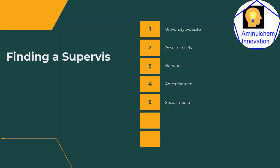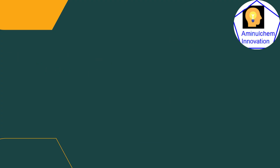How to find a supervisor? Finding a supervisor is challenging. However, if you follow certain strategies, you can easily find a supervisor to apply for admission and scholarship. Some strategies are: university website, research field, network, advertisement, and social media. Now let us explain.